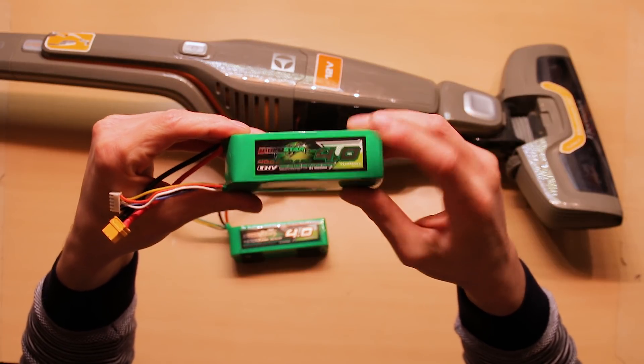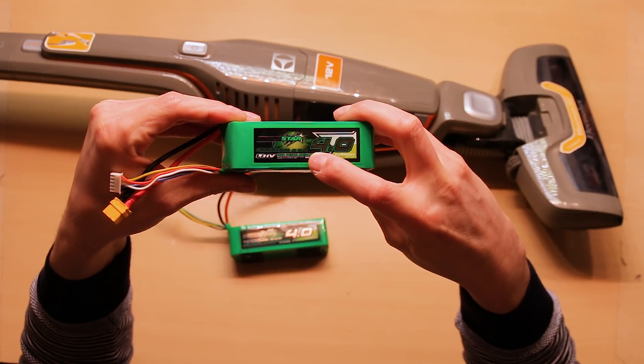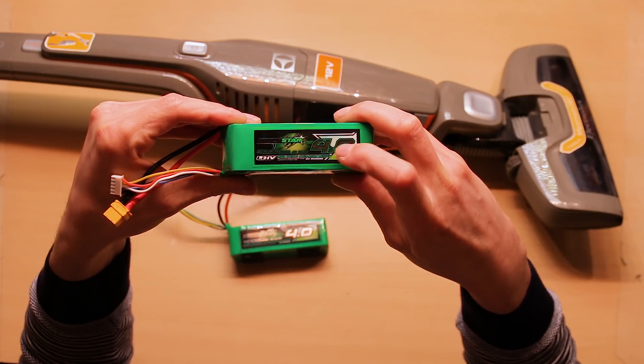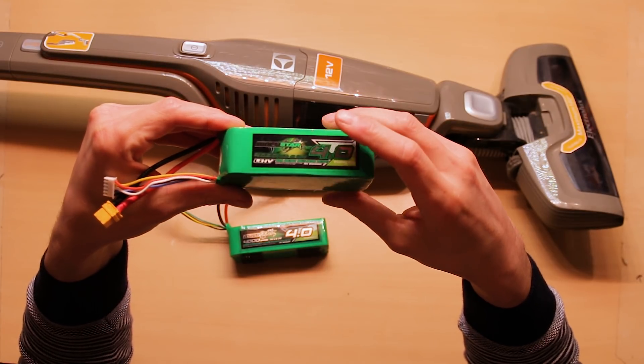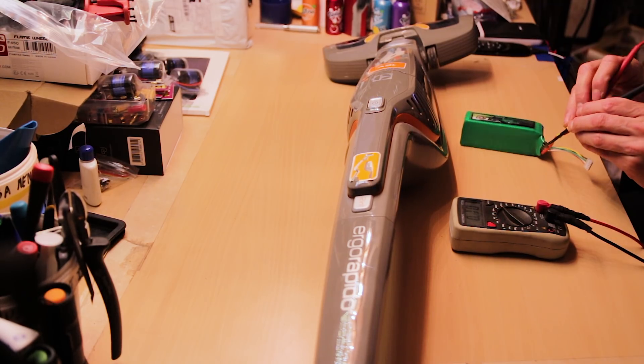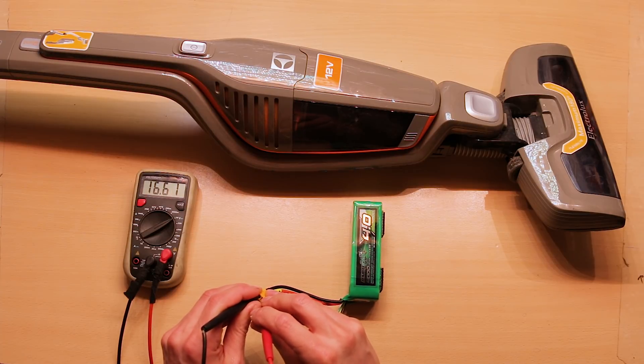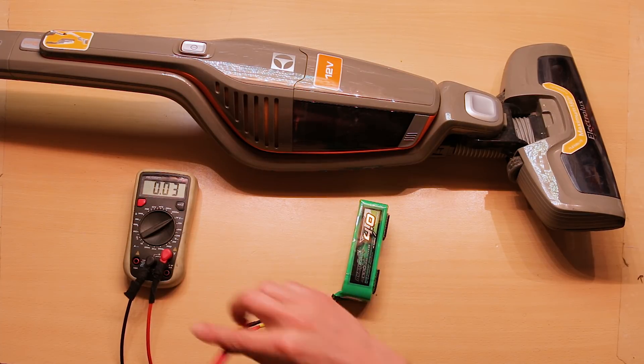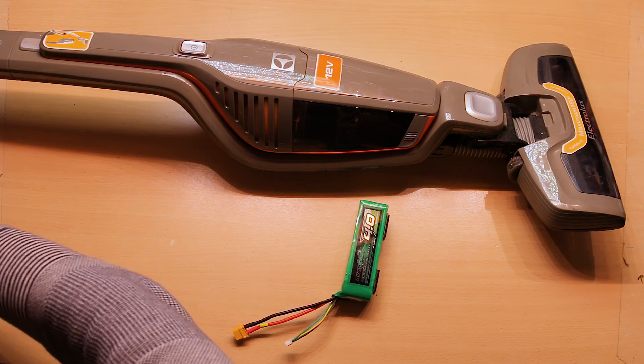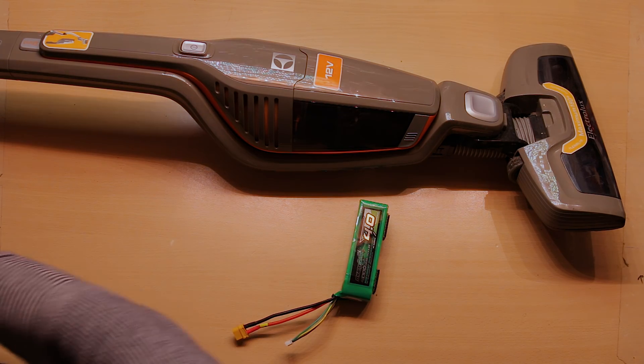This is a LiPo battery, 15 volts, 4 cell, 4000 milliamps. It's on storage voltage, so it's already 16.6. So this vacuum cleaner is going to vacuum like it never has vacuumed before.